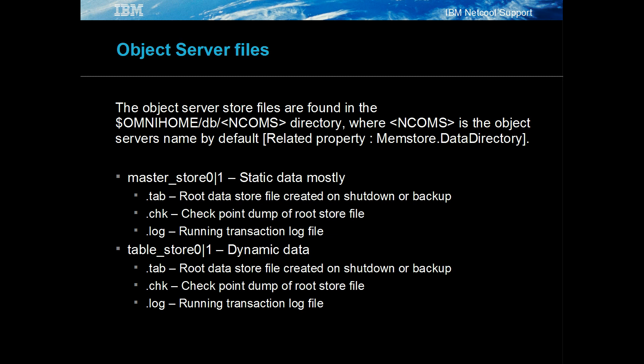This directory holds three types of files: tab, check, and log, with two file names: master_store and table_store. The master store files hold mostly static data, while the table store files hold mostly dynamic data. The check and log files are created whilst the object server is running, whilst the tab file is the last reconciled object server file, which is created when the object server shuts down gracefully.